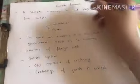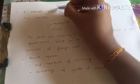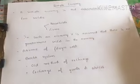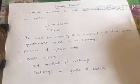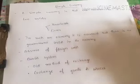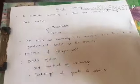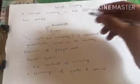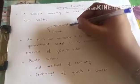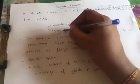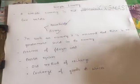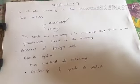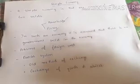A simple economy is one which consists of only two sectors. Those two sectors are household and firm. Household means a group of people or a family, so a household is essentially one family unit.